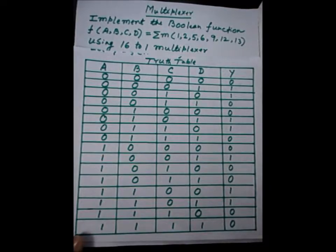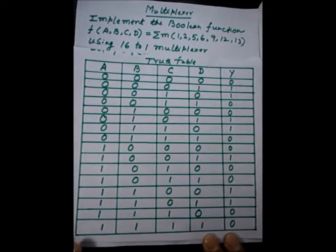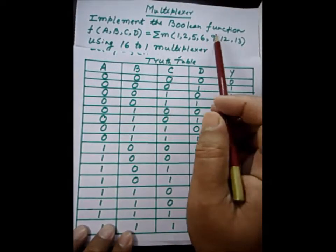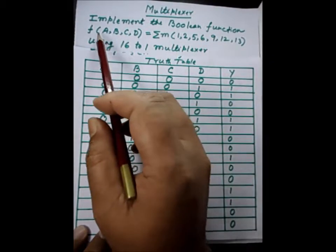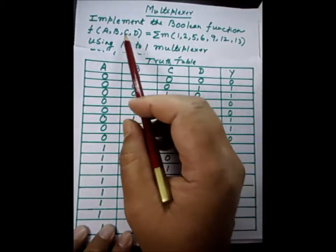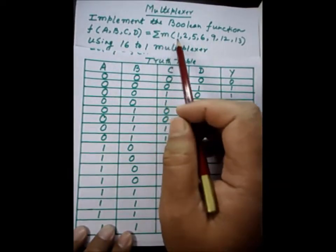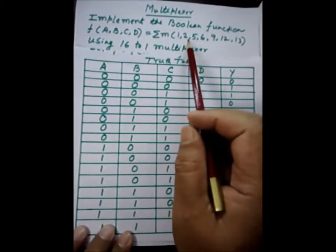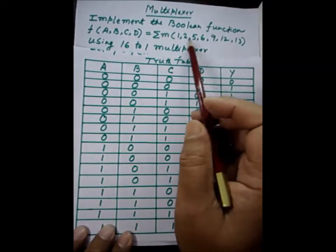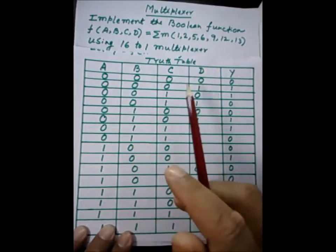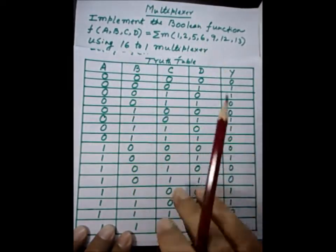We will discuss the implementation of a Boolean expression with a multiplexer. The variables are A, B, C, D and the expression is given in the summation of products form — SOP form. These are the minterms and that expression should be implemented with a 16-to-1 multiplexer.